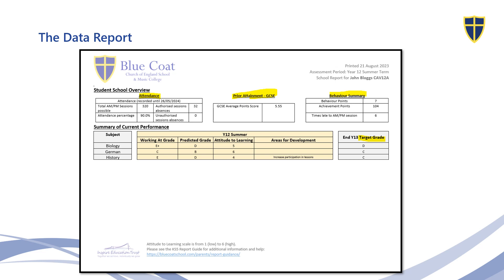For each individual subject, students will be given a working at grade. This working at grade will be a summary of current performance either in module or summative assessments that they've completed at this point in time. The most important information you'll get from the class teacher is that predicted grade. You are looking for that predicted grade to be the same as or better than the target grade. There is obviously an issue if you see that predicted grade is below the target grade, and that will be an area for discussion at parents' evening. Alongside that academic information, we provide you with an attitude to learning score, and if a child is presenting issues in class, staff may share with you an area for development.